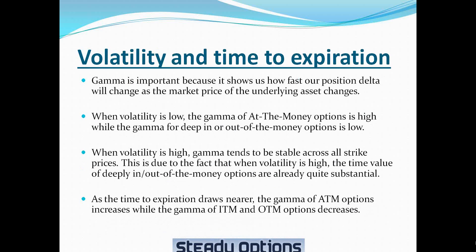Effect of volatility and time to expiration on gamma. Gamma is important because it shows us how fast our position delta will change as the market price of the underlying asset changes.